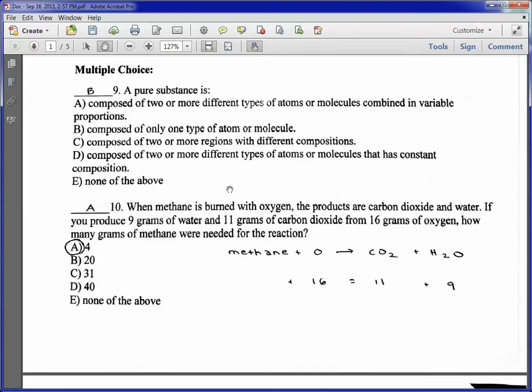For number nine, a pure substance is B, composed of only one type of atom or molecule. If it were composed of two or more, either atoms or molecules or regions, that would be a mixture.